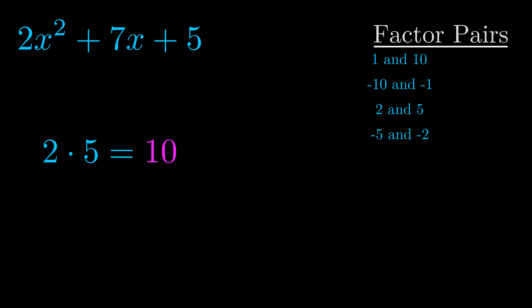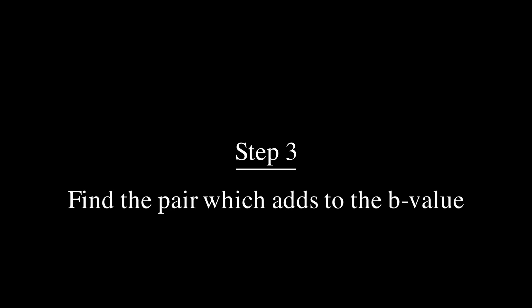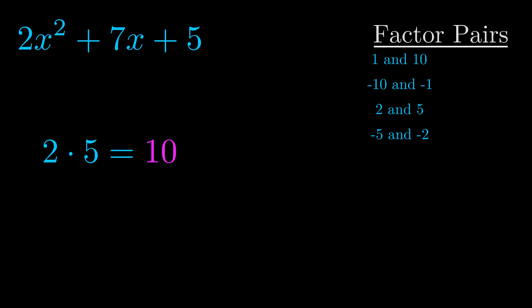Once you have these factor pairs, the goal is to find which of these pairs adds to the b value. The b value is the coefficient on the x term. That's the middle term, the one that we haven't done anything with yet.